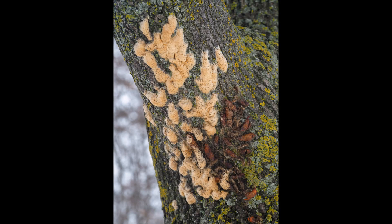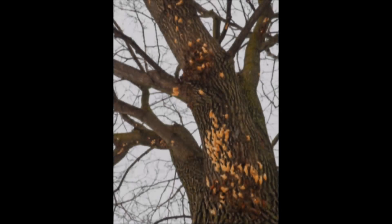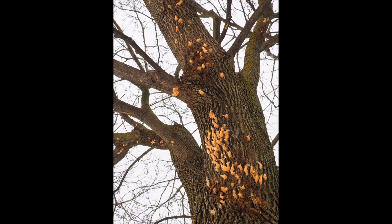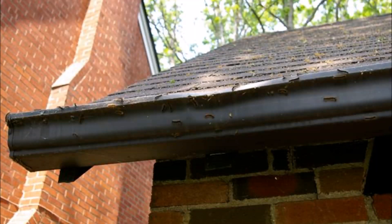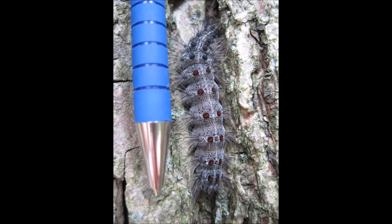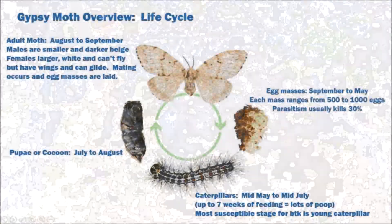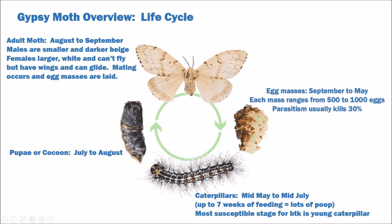Gypsy Moth overwinters in an egg mass, usually stuck to the bark or in crevices of trees. Each egg mass can hold between 300 to 1,000 eggs. Parasitic wasps tend to destroy around 30% of these eggs before they hatch. Caterpillars begin to emerge in mid-May and are usually noticed into July. Initially, caterpillars are very small but grow to a few inches in length and are voracious eaters. The initial small stage of the caterpillar is the most susceptible to pesticide spraying. Caterpillars become much hardier as they grow.